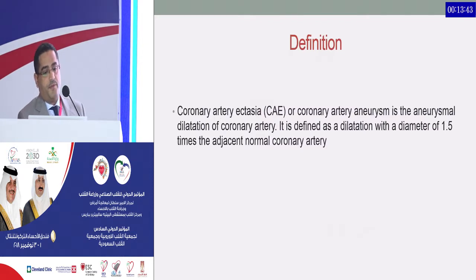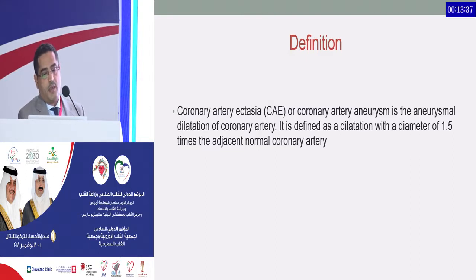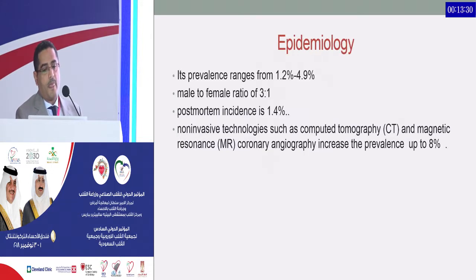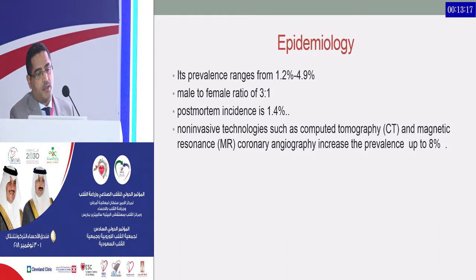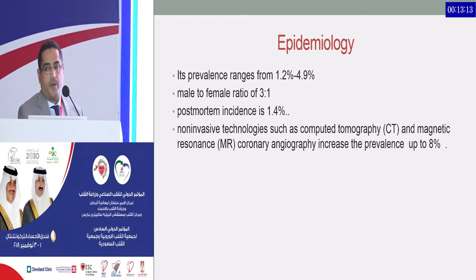Coronary artery ectasia is defined as aneurysmal dilatation of the coronary artery, defined as a dilatation of the diameter 1.5 times the adjacent normal coronary artery. It is more prevalent in males than females. The general prevalence of ectasia is 1.2 to 4.9 percent. Post-mortem incidence is 1.4 percent. Non-invasive technologies such as CT and MRI increase the prevalence up to 8 percent.